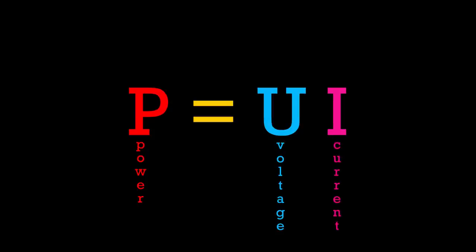Power is measured in watts, voltage is measured in volts, and current is measured in amps. This means we can say the formula like this: watts equal volts times amps.